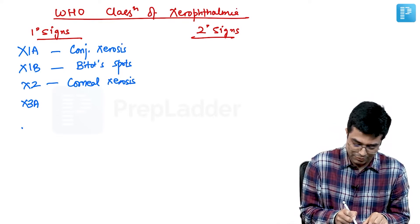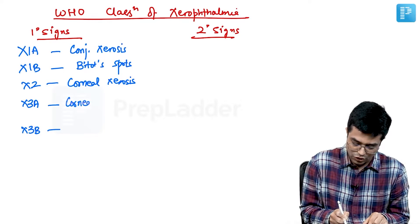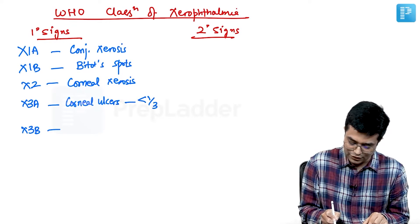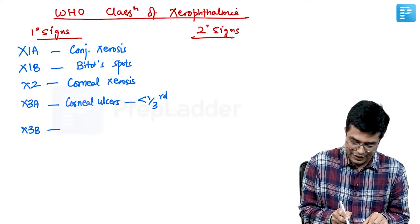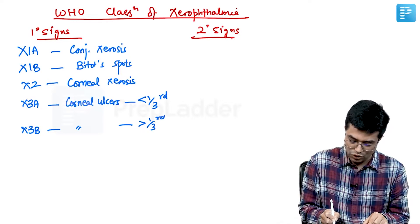we have X3A and X3B. Both will be having corneal ulcers. So, X3A, there will be corneal ulcer or keratomalacia involving less than one third of the cornea. Whereas, here, there will be corneal ulcers or keratomalacia involving more than one third of the cornea.